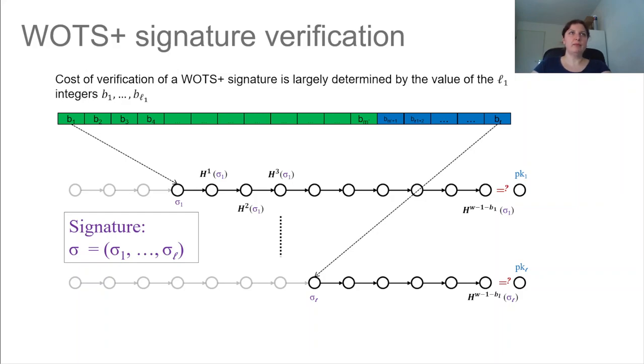Namely the cost of verification of a WOTS+ signature is actually largely determined by the value of the L1 integers B1 up to BL1. So here B1 was the fourth node in chain. And the verifier actually has to compute 1, 2, 3, 4, 5, 6, 7, 8, 9 hash functions to have something to verify against the public key. Now for the verifier, it would be much easier if this value was actually towards the end of the chain. And they would only have to do a few hash functions.